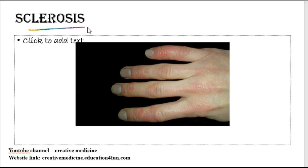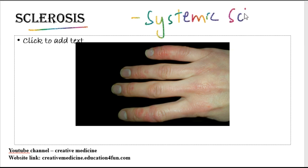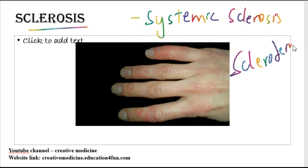Sclerosis. Sclerosis is seen in systemic sclerosis and scleroderma. Sclerosis shows a bound-down appearance, indurated and stretched.